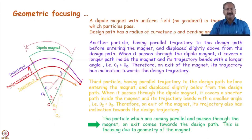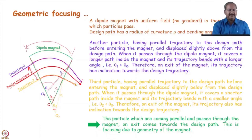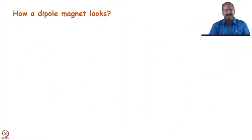The 1/ρ² term in the kx equation of motion quantitatively represents this geometrical focusing. Now we turn to discussing how dipole and quadrupole magnets and gradients are physically realized.